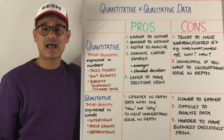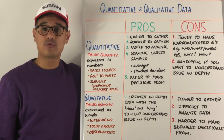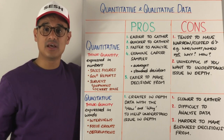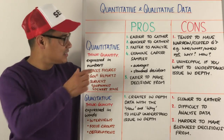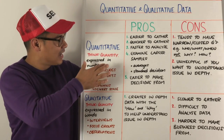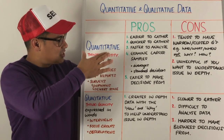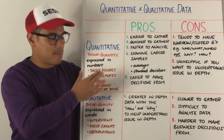Let's have a session on quantitative and qualitative data. We'll start with quantitative data. Quantitative data — think quantity, it's almost in the name — is all about data that's expressed in numbers.